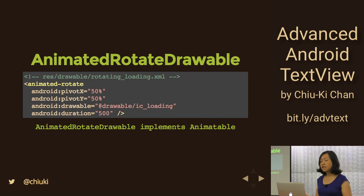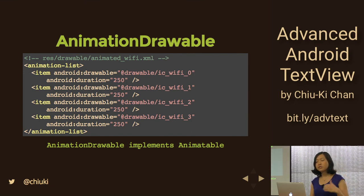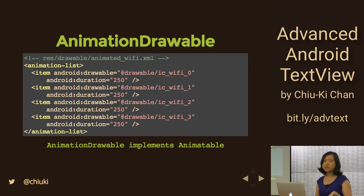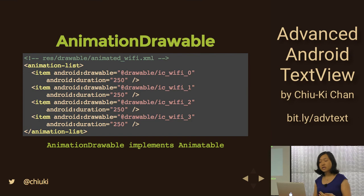Under the hood this gets translated into the class AnimatedRotateDrawable which implements Animatable. The next thing is an animated Wi-Fi dot XML — a frame-by-frame animation using the XML tag animation-list. Here I have four frames: 0, 1, 2, 3, because we are computer scientists and count from zero. Each frame has a duration of 250 milliseconds. Android loads this and shows each frame for the specified duration. This gets translated into the Java class AnimationDrawable, which also implements Animatable.